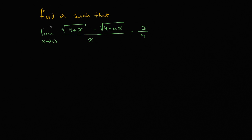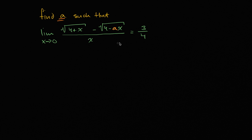We have an interesting problem here. Find a such that the limit as x approaches zero of the square root of four plus x minus the square root of four minus a times x, all of that over x, is equal to three-fourths.